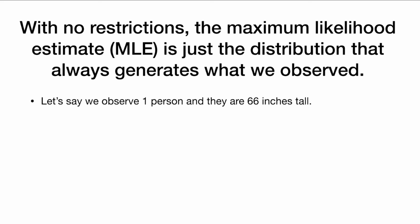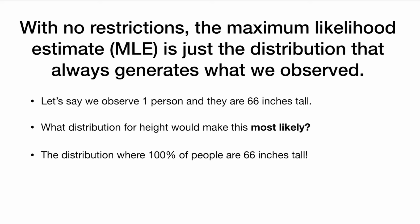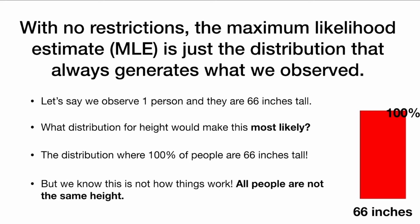Let's look at another example. Let's say we observe one person, and they are 66 inches tall. What distribution for height would make this most likely? Well, it would be the distribution where 100% of people are 66 inches tall. So if the distribution looks like this, then we would see this data 100% of the time — that is obviously the most likely.